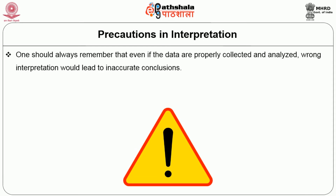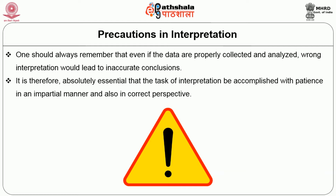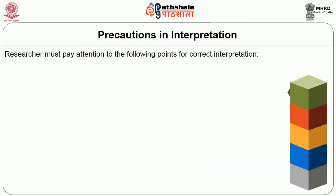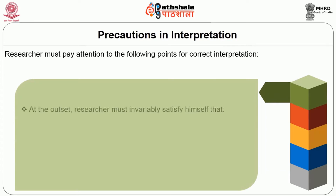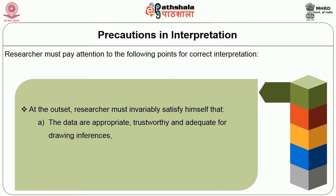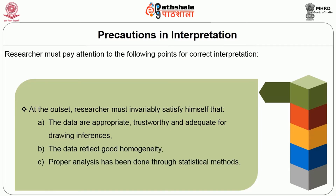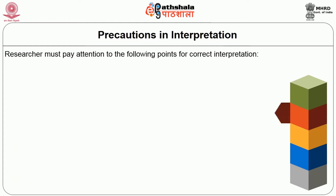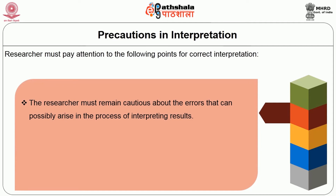Precautions in Interpretations: One should always remember that even if the data are properly collected and analyzed, wrong interpretation would lead to inaccurate conclusions. It is therefore absolutely essential that the task of interpretation be accomplished with patience in an impartial manner and also in correct perspective. The researcher must pay attention to the following points for correct interpretation. First, the researcher must invariably satisfy himself that the data are appropriate, trustworthy and adequate for drawing inferences. The data should reflect good homogeneity and proper analysis has been done through statistical methods. The researcher must remain cautious about the errors that can possibly arise in the process of interpreting results.